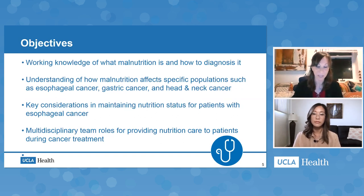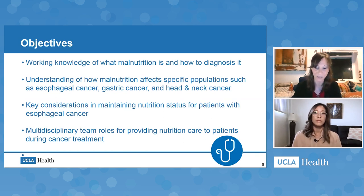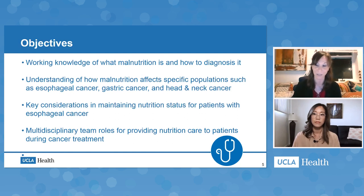Our objectives for tonight's lecture are: ensuring a working knowledge of what malnutrition is and how to best assess and diagnose it; understanding how malnutrition affects specific cancer populations, specifically our upper gut cancers; focusing in on our esophageal cancer patients and key considerations for maintaining nutrition status in this population; and how important a multidisciplinary team is for ensuring that appropriate nutrition care is given to these patients.